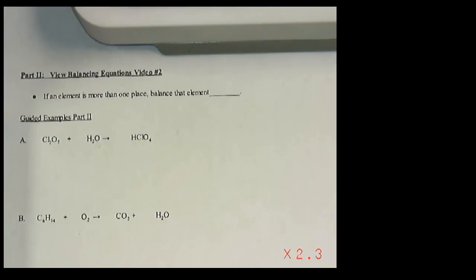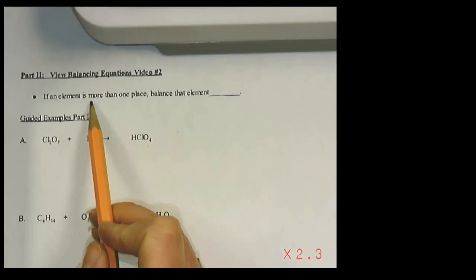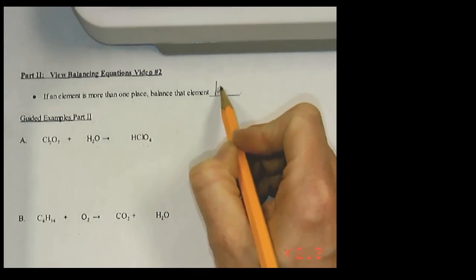The second video on balancing equations is going to look at equations that are a bit more complicated to balance. This time you're going to see compounds that have the same element in more than one place on each side of the equation. So you'll see there's oxygen two places here in the reactants, one place in the products. So this makes this a little more complicated and the rule that goes with this is if an element is more than one place, balance that element last.